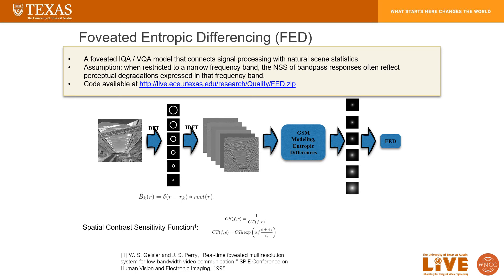First, for the input reference and distorted image pair, we applied DFT to transform each of them into the frequency domain. Second, we designed a bank of filters in the frequency domain with narrow frequency bands, and filtered each image. Then, we modeled the bandpass responses of each subband after IDFT as GSM models, and computed differences of the local entropies between the reference and the distorted images. Next, we weighted the spatial local entropy maps from each subband using contrast sensitivity functions whose frequencies were tuned to be the center frequency of each subband. Finally, we computed the absolute entropic differences between the reference and the distorted images and took the absolute sum.